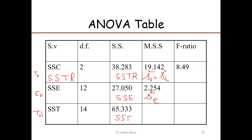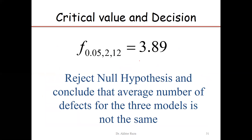The F-statistic is computed by dividing the known source variance (mean square treatment) in the numerator by the unknown source variance (mean square error) in the denominator. The calculated F value of 8.49 is obtained as 19.14 divided by the mean square error. The critical value from the F-table at α = 0.05 with degrees of freedom numerator (dfn) = 2 and degrees of freedom denominator (dfd) = 12 is 3.89.